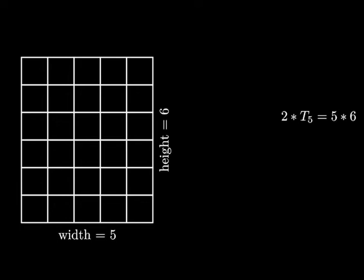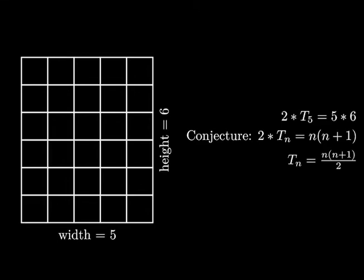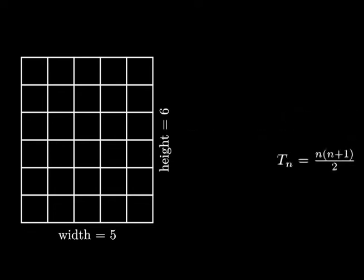In the case of t5, we get that the width is 5 and the height is 6, so there are 30 boxes. So 2 times t5 is 30, which gives us that t5 equals 15. But this pattern looks like it holds for all n. So we might conjecture that 2 times the triangular number tn is exactly n times n plus 1. Or tn is n times n plus 1 over 2. Okay, how do we prove this?